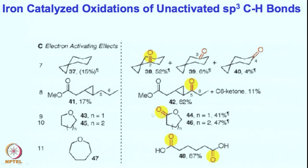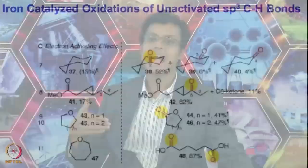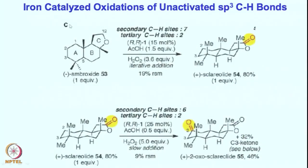The oxygen lone pair can activate the alpha position, and the cyclopropane ring can also activate the alpha position of a molecule — both are quite powerful for selective functionalization reactions. So these are electron activating effects. We have seen previously deactivating effects from electron withdrawing groups. Now we would like to see whether for natural products or their analogues — complicated molecules — we can predict the selectivity.